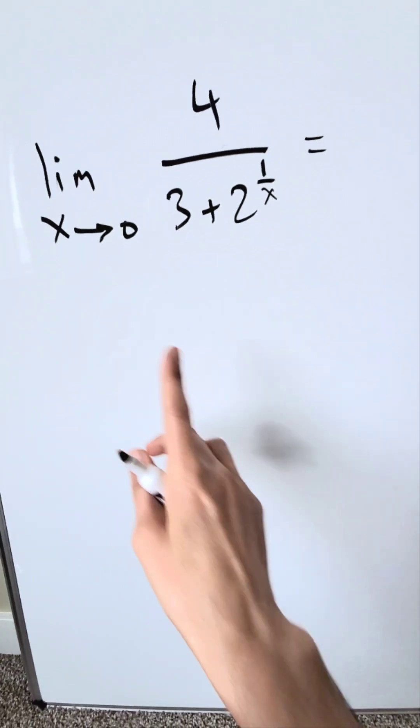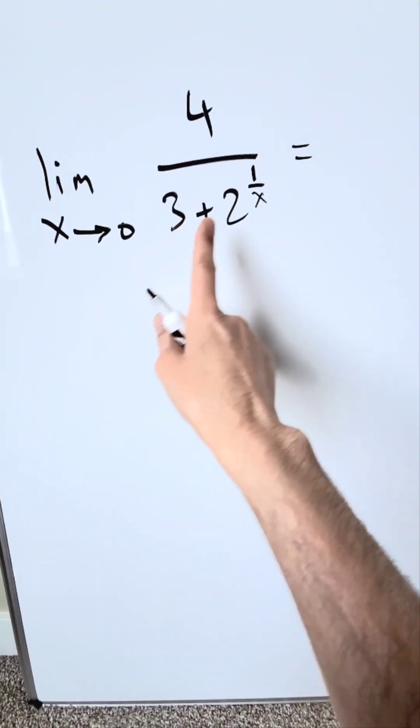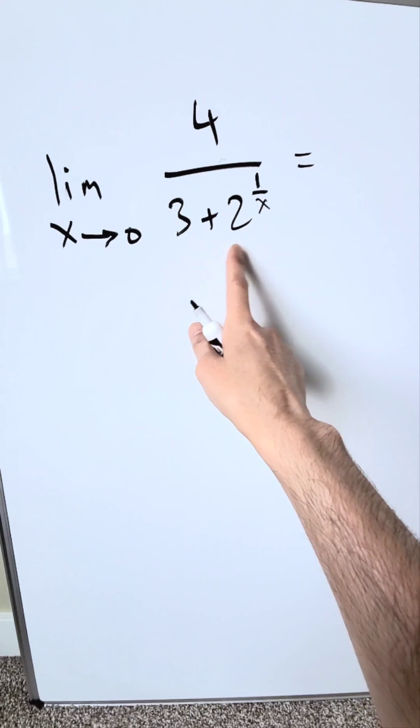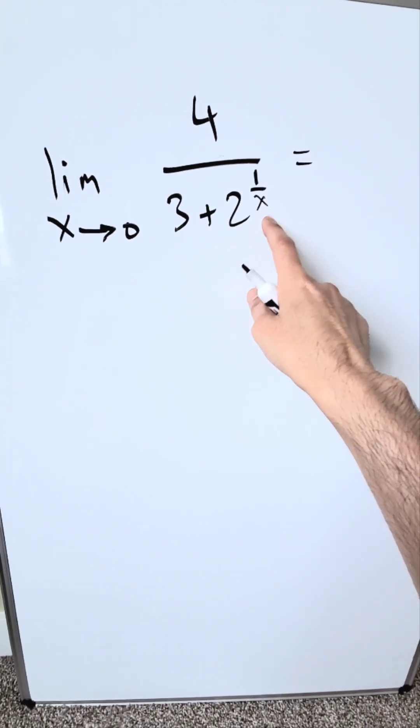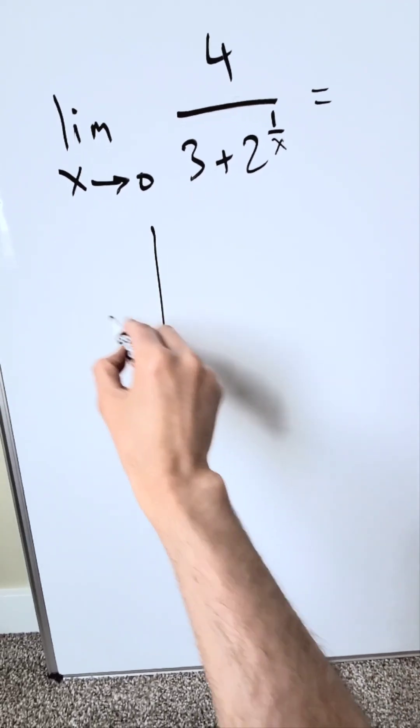Let's have some fun here with this limit question. Limit as x approaches 0, I have 4 divided by 3 plus 2 exponent 1 over x. This exponent here is our issue, the cause of concern.